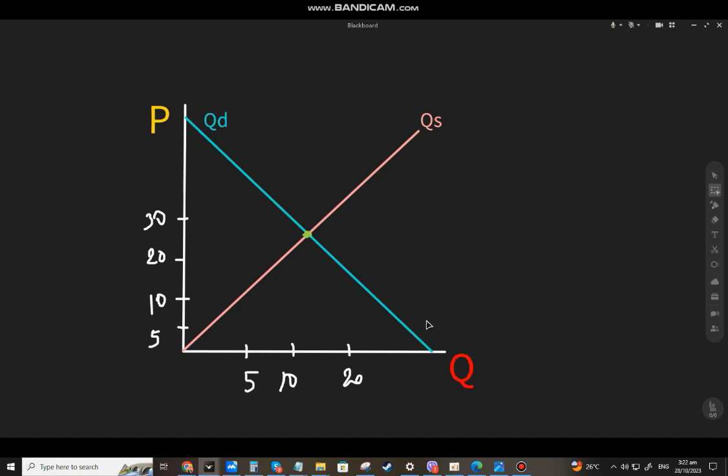We have a demand curve, the blue one Qd, and a supply curve, the pink one Qs. For quantity demand, if the price of coffee is high, demand is lower because people won't buy when it's expensive. But when the price drops, say to 5 pesos, demand increases because it's affordable.